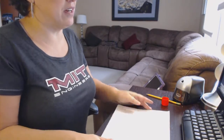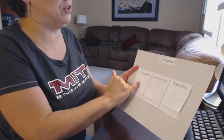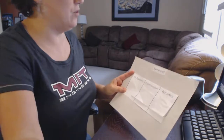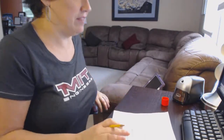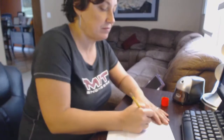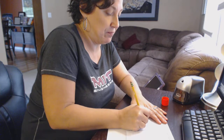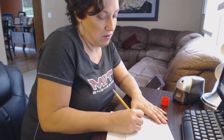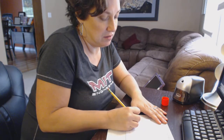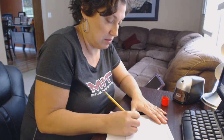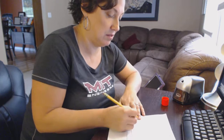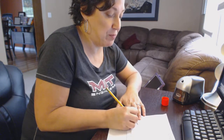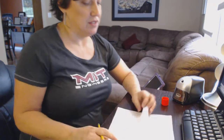The first thing we're going to do is define each of our words: mutualism, commensalism, and parasitism. Take a pen or pencil and write the definition. Mutualism is a relationship where two or more organisms are both benefiting — they're both happy, they're both making out in this relationship.